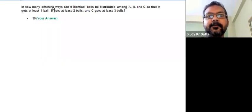In this question on permutation and combination, we need to determine in how many ways can you distribute nine identical balls amongst A, B, and C so that A gets one, B gets at least two, and C gets at least three.